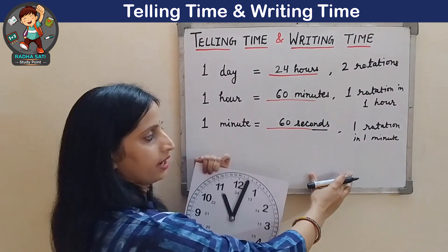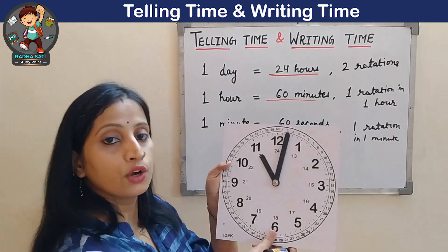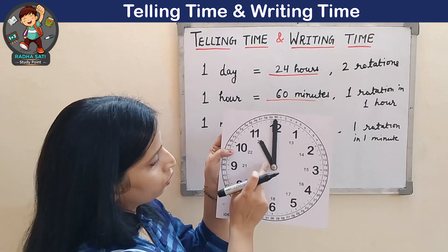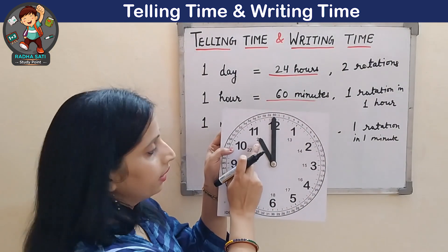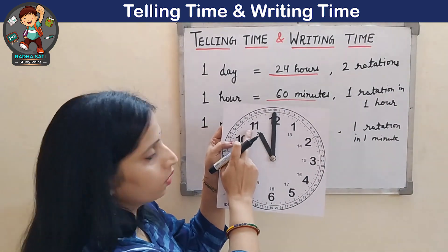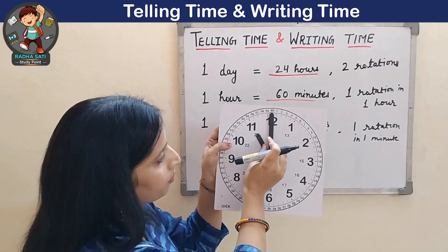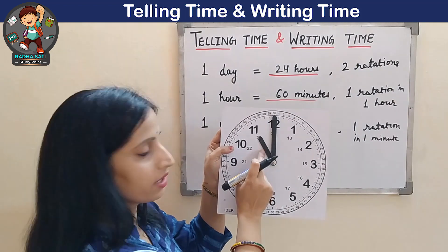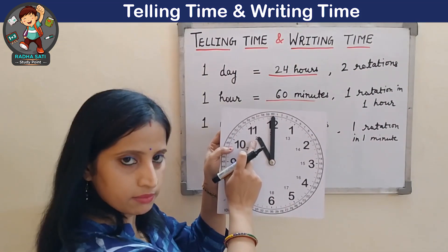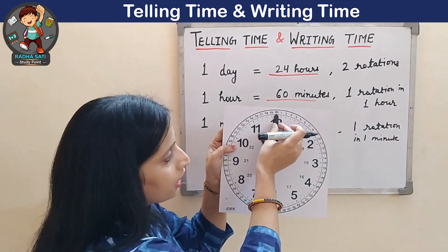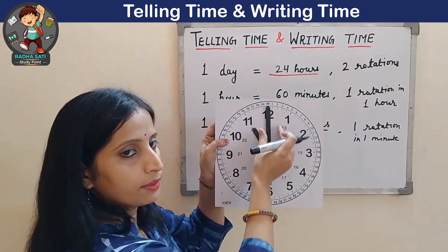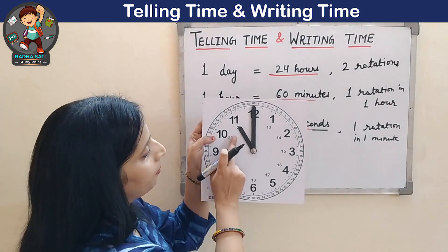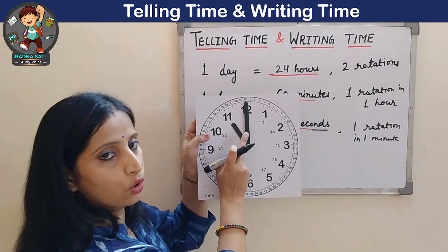Now, by using this clock, we will learn how to read time. Here, the hour hand is pointing to 11, and the minute hand is at 12. Whenever the hour hand is pointing to any number and the minute hand is at 12, we read the time in the form of O'clock. For example, here the time is 11 O'clock.